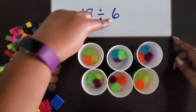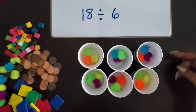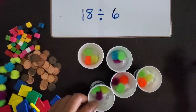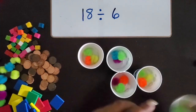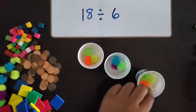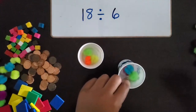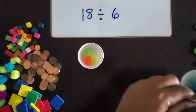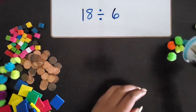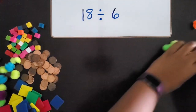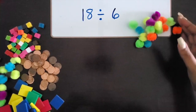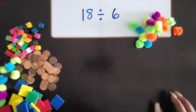Now, if you wanted to represent that six as the number in each group, and we were missing the number of groups, that would look a little bit different. So I'm going to dump these pom-poms out. We know that there are 18. This time we don't know how many groups we have, but we know that six pom-poms are going to go in each group.